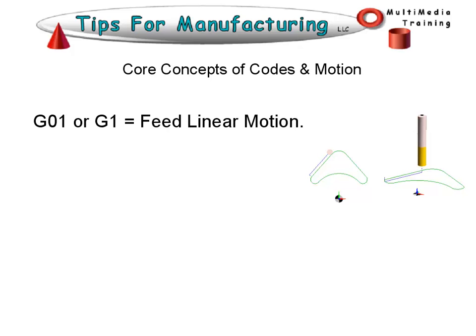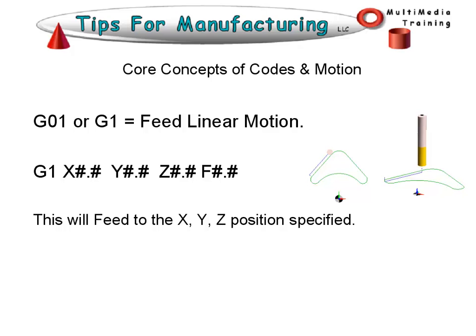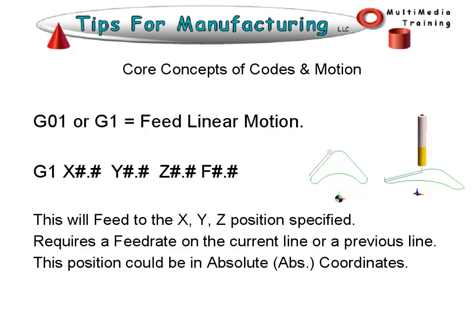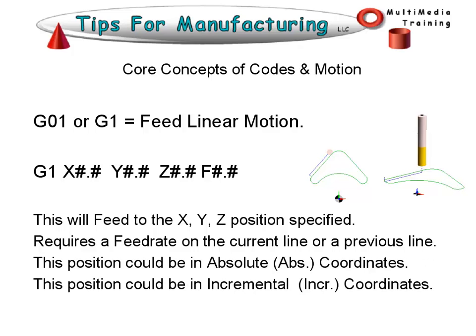G01, or G1, is a feed linear motion command. The format is G1 with the X, Y, and Z positions. This requires a feed rate value because there is a feed move. This will feed to the XYZ position specified, and requires a feed rate on the current line or a previous line. This position could be in absolute or incremental coordinates.